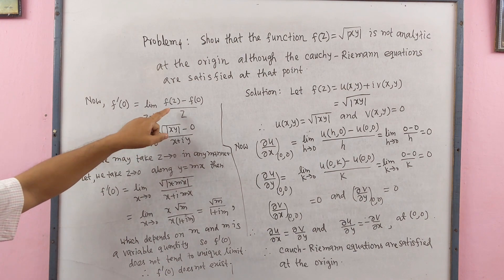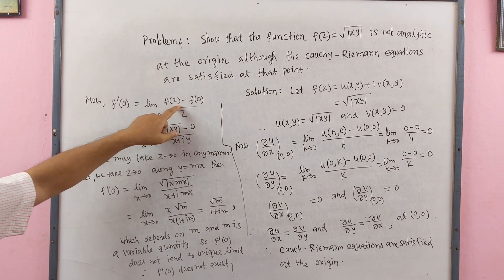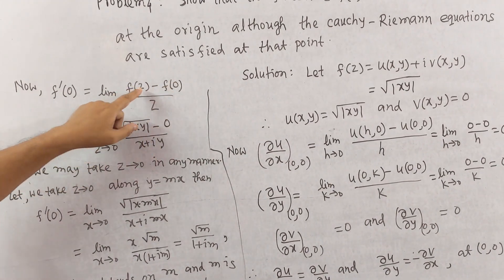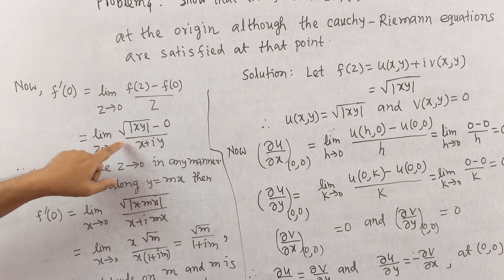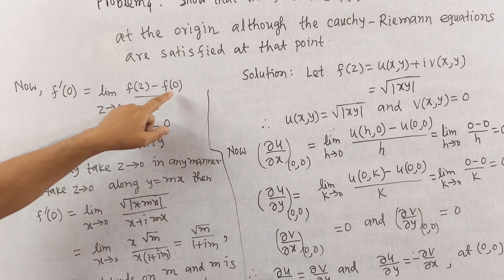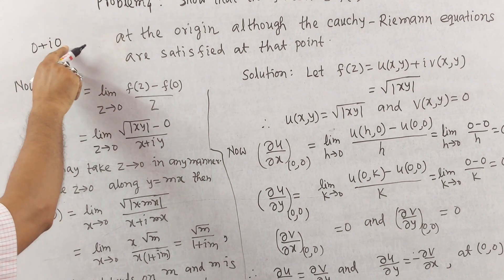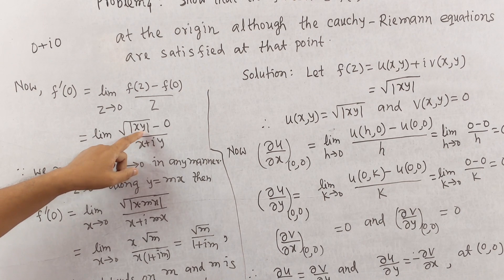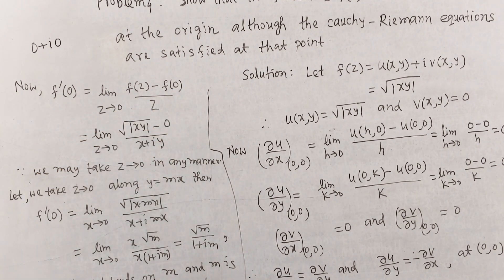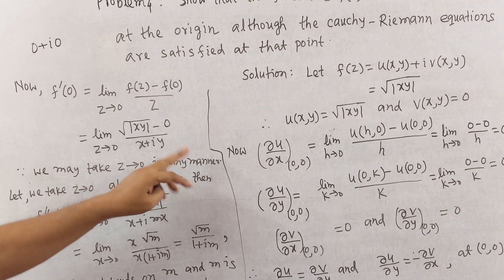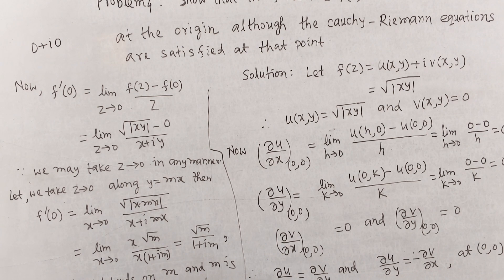Here f(z) = √|xy| and f(0) = 0, so f'(0) = limit z→0 of √|xy| / z. Since z = x + iy, this is a complex variable, and z → 0 may be taken in any manner in the Argand plane — unlike the real line where we only have left-hand and right-hand limits.